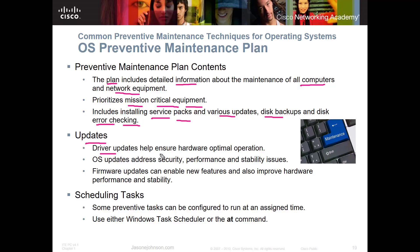On updates: driver updates help ensure optimal hardware operation. Typically you won't go looking for driver updates unless there's a critical patch, a known vulnerability, or you're installing new hardware or software that requires an updated driver. Operating system updates address security, performance, and stability issues. Windows has a rolling update system — check the Microsoft website for the current update plan, as it may have changed since this recording.